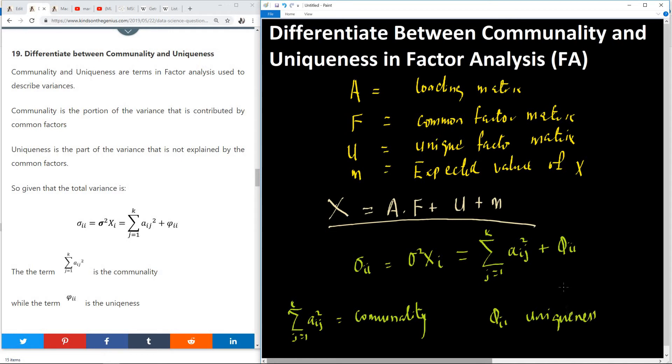Again, I'm not trying to explain everything bit by bit and deriving all the formulas. I'm just trying to help you understand the concept. The point is that communality is the portion of the variance that is contributed by the common factors, and uniqueness is the portion of the variance that is not explained by the common factors.